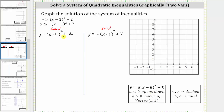Let's go ahead and graph this first parabola. Notice how a is equal to one, which means the parabola opens up. And now let's identify the values of h and k, which will give us the coordinates of the vertex. Notice because we have x minus two, h is positive two.